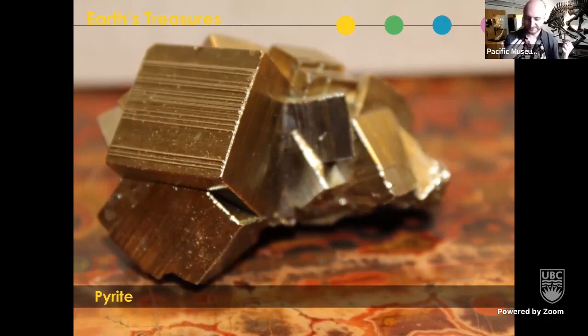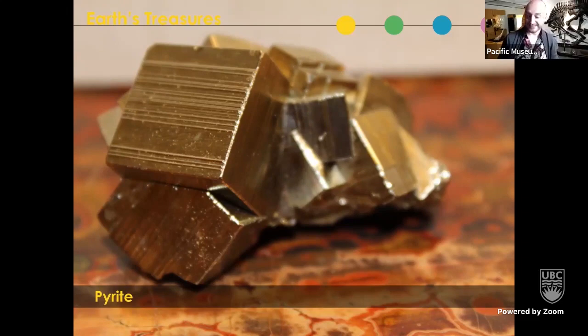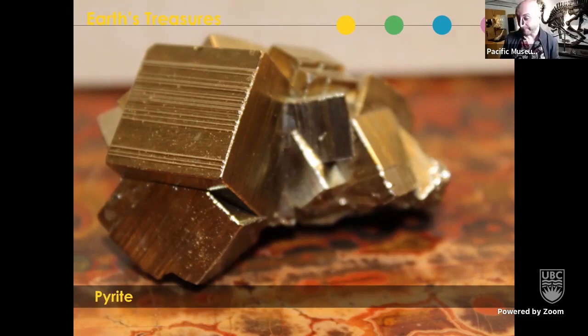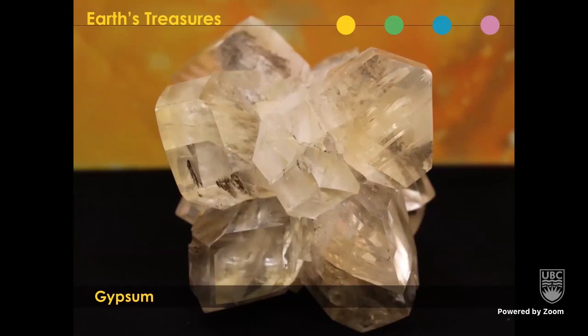Pyrite is truly a stunning mineral — it looks like gold. Many early explorers loaded their boats with pyrite samples, returning to Europe excited about finding gold, only to be informed they'd found the far less valuable pyrite. That's why we know pyrite today as fool's gold. If you need a memory trick: when you run into pirates, don't give them your real gold — give them your pyrite, your fool's gold.